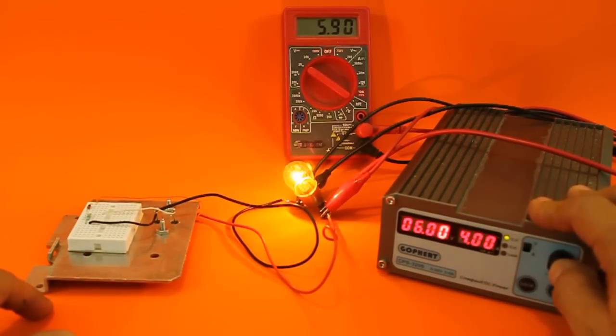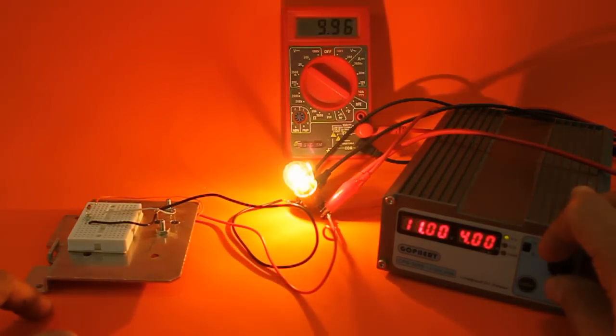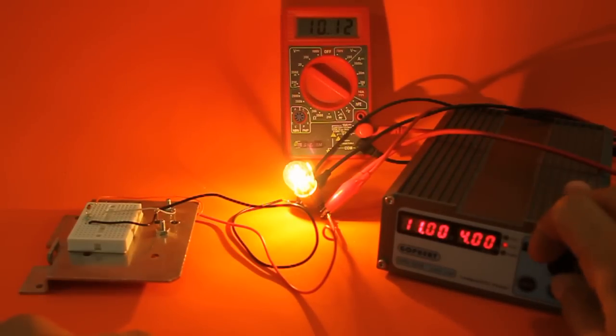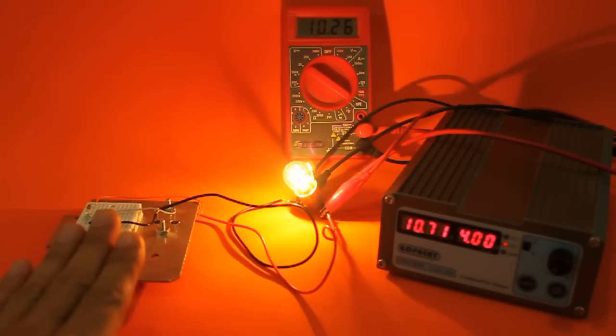So let me increase the voltage: 7, 8, 9, 10, 11 volts. But we only have 10 volts reaching the lamp. Let me increase more: 12, 15 volts. But the voltage is regulated at around 10.2, 10.3 volts.